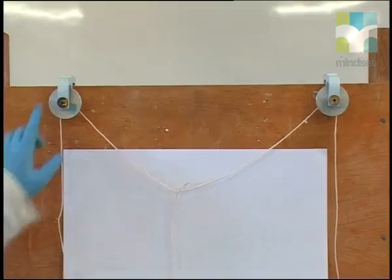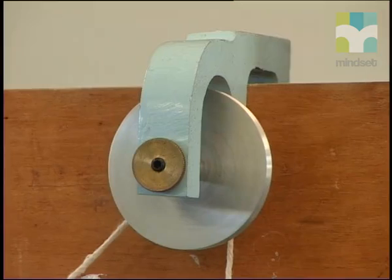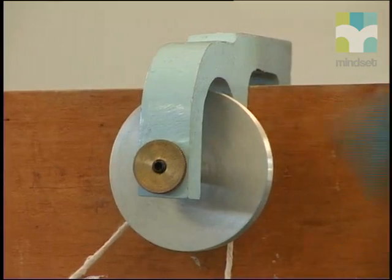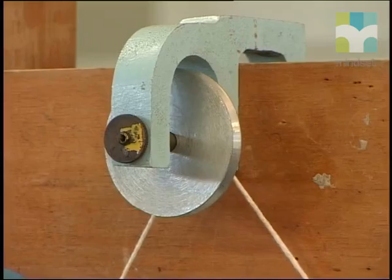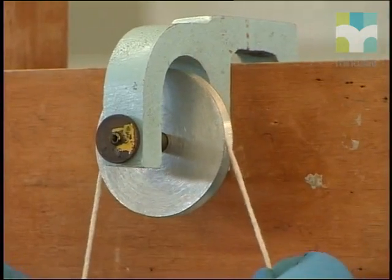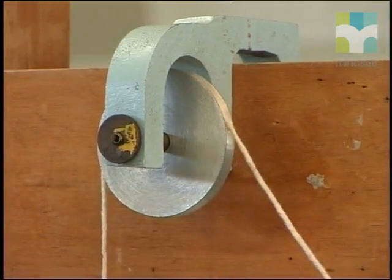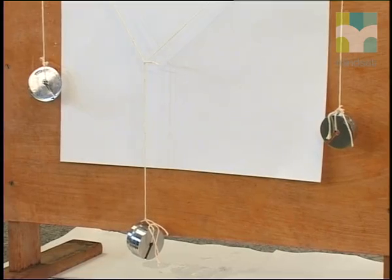At the top, we have these two pulley wheels. They spin freely. This is important because they must roll when the string moves even slightly. Here are the strings. They go over the pulleys and these weights hang on the ends.